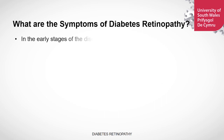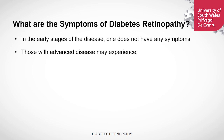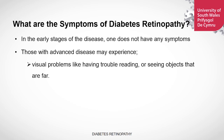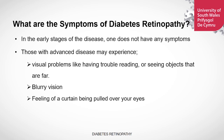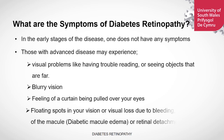What are the symptoms of diabetic retinopathy? In the early stages of the disease, one does not have any symptoms. But later, as the disease is progressing, one may experience visual problems where you have trouble in reading or seeing objects that are far, your vision becomes blurry, feelings of a curtain being pulled over your eyes, floating spots in your vision, and there could be visual loss due to bleeding, retinal detachment, or macular edema.